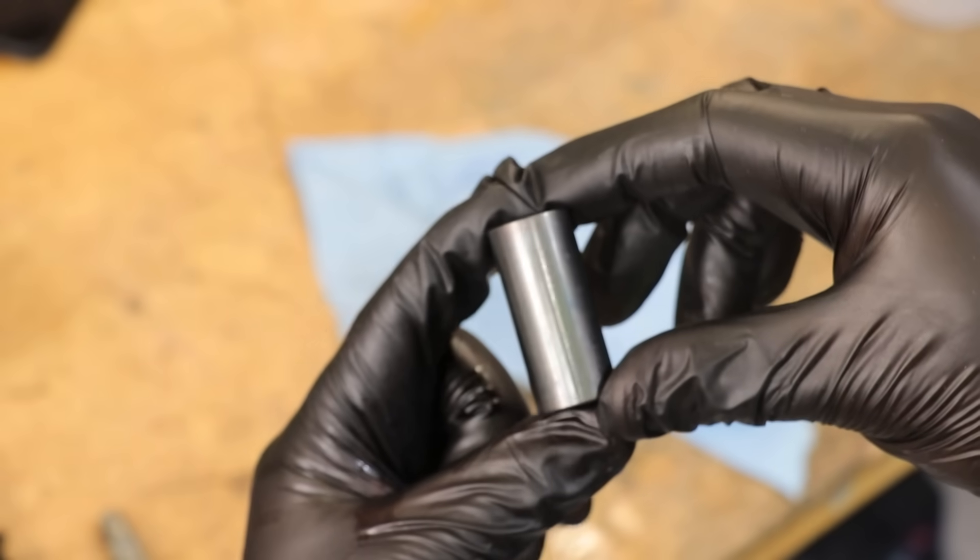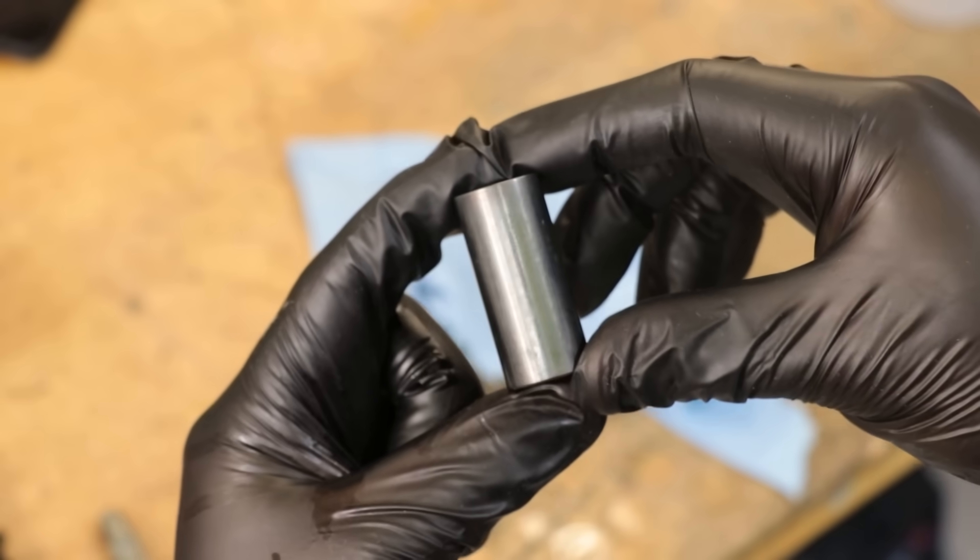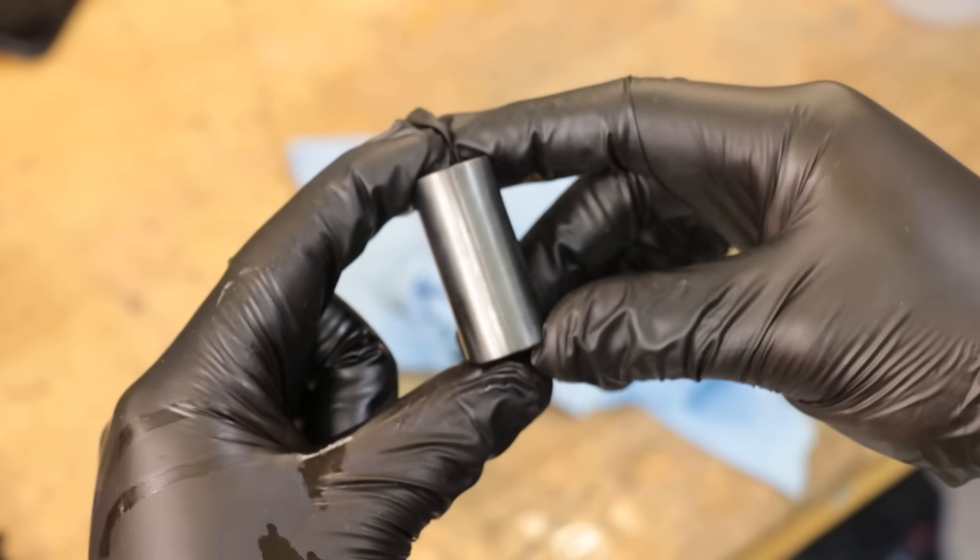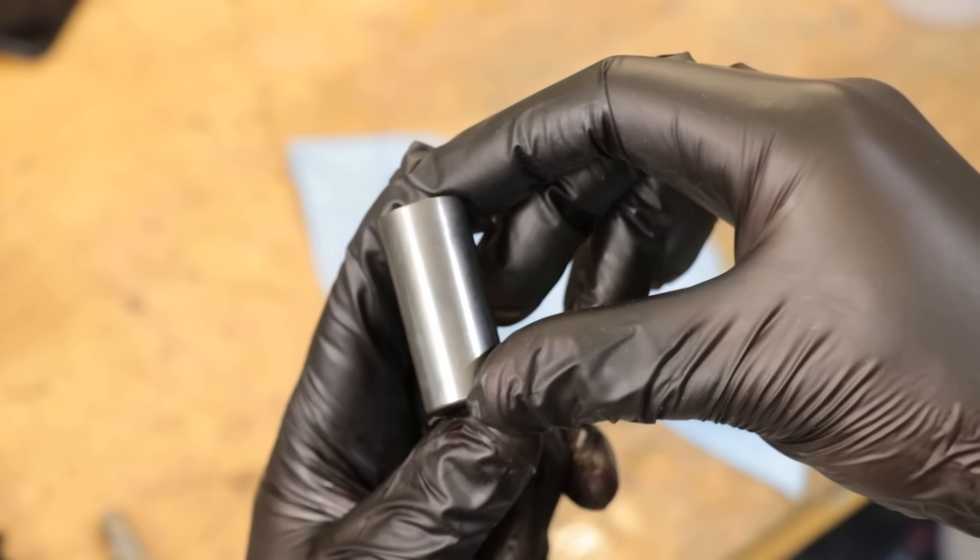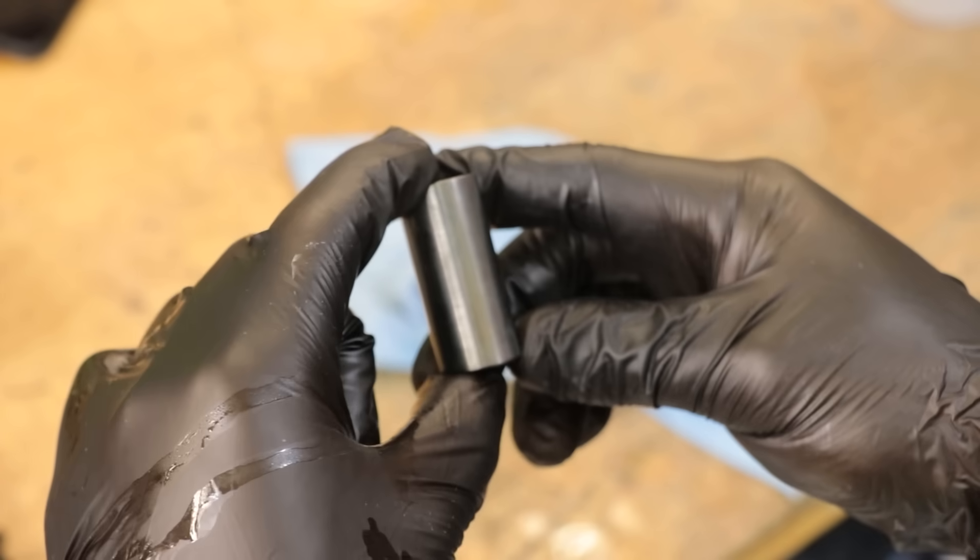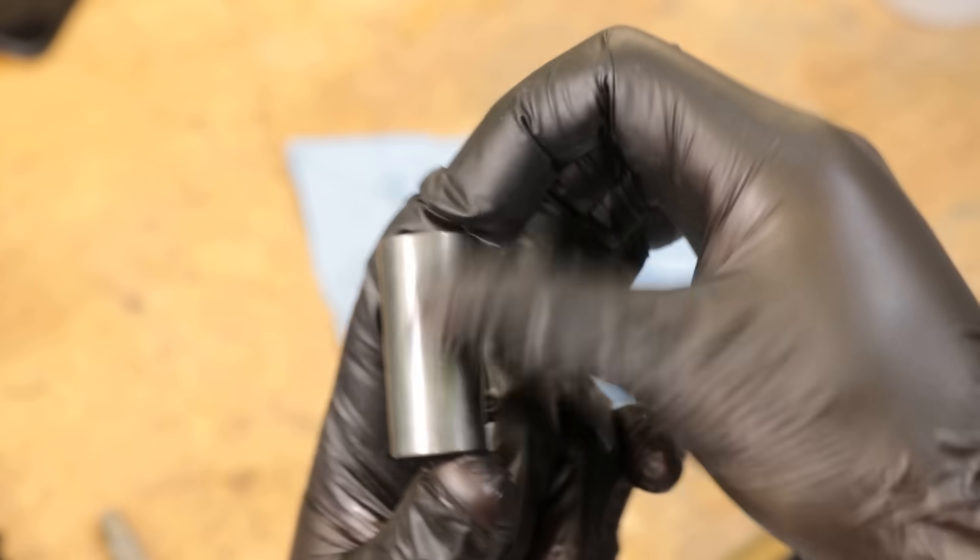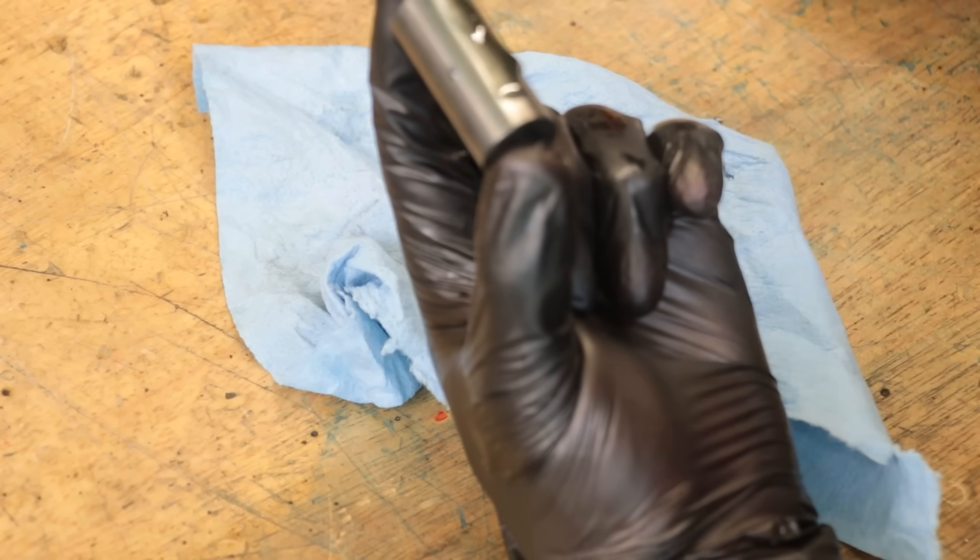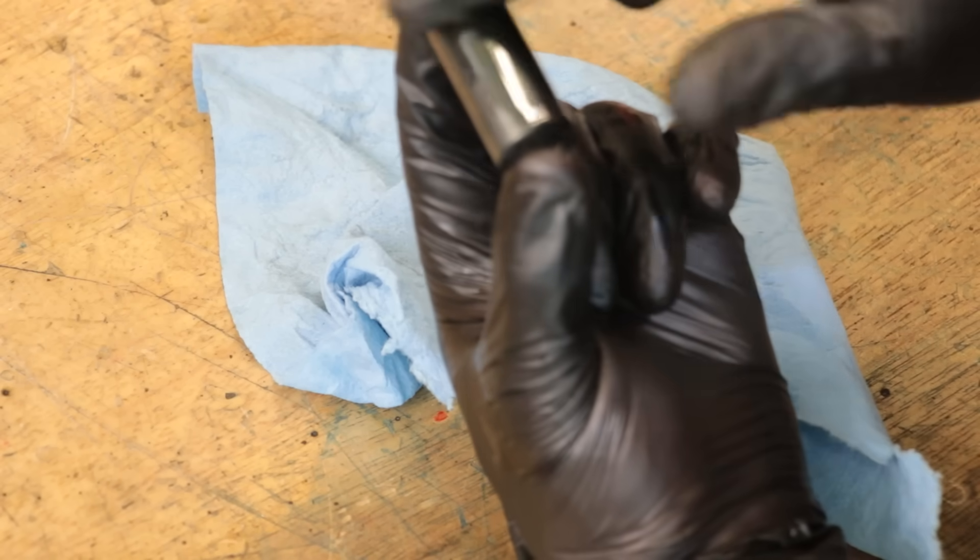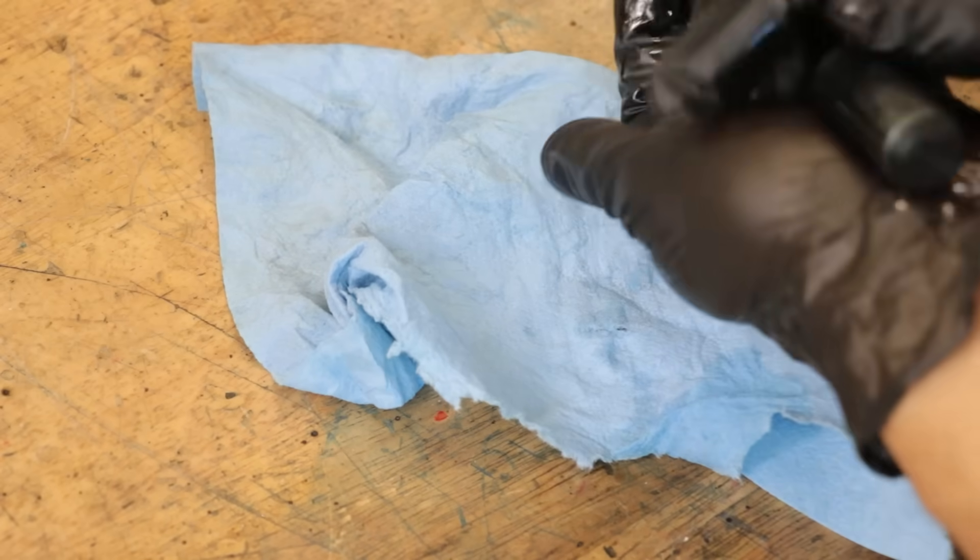At this point, the part is now blued but it's not rust-resistant yet, because for this type of bluing the rust protection doesn't come from the black finish itself, but from the oil which we now need to add. I normally use 3-in-1 oil which seems to work, but everyone has their special drop of oil which they deem to be the best.